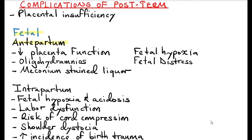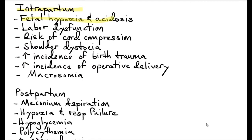Antepartum fetal complications of post-term pregnancy include reduced placental function and oligohydramnios, which result in fetal hypoxia and fetal distress. A distressed fetus tends to pass meconium into the amniotic fluid, resulting in meconium-stained liquor. During labor, fetal distress can occur due to fetal hypoxia, fetal acidosis, and labor dysfunction. Labor dysfunction can be prolonged or difficult because of reduced amniotic fluid, the large size of the baby, and non-molding of the head due to hardening of the skull bones. There is also risk of cord compression because of reduced amniotic fluid and reduced Wharton's jelly.